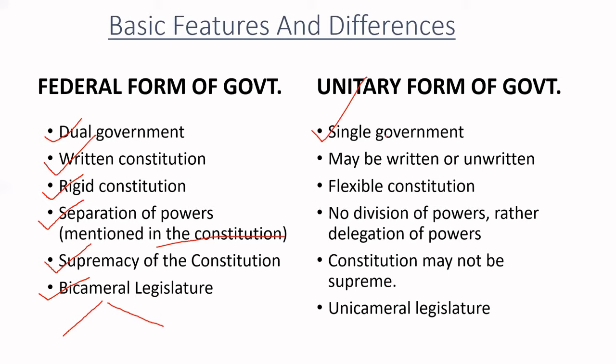The constitution in a unitary form of government may be written — for example, in Japan there is a written constitution. This constitution is comparatively flexible compared to the federal form of government, meaning its amendments can be made in a very easy way. There is no division of powers.